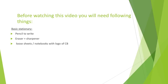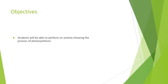We are going to do an activity. You will need a small plant in a tub or any plant that is available at your home, cardboard or aluminum foil, a pair of scissors and paper clips. Objective: students will be able to perform an activity showing the process of photosynthesis.